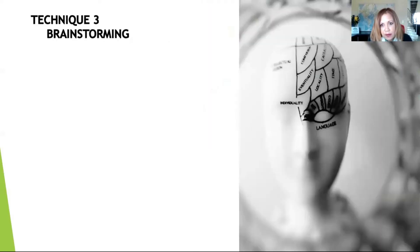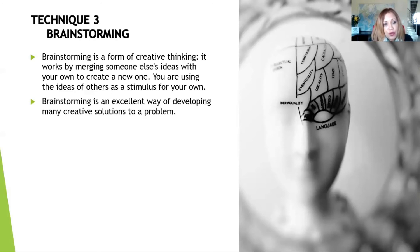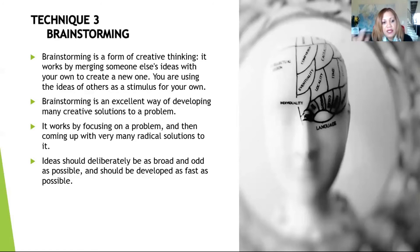The third one is brainstorming. I'm sure you've all heard about brainstorming. How do you do brainstorming? It's a form of creative thinking. It works by merging someone else's ideas with your own to create a new one. You're using the ideas of others as a stimulus for your own. Brainstorming is an excellent way of developing many creative solutions to one problem. It works by focusing on a problem and then coming up with very many radical solutions to it. Ideas should deliberately be broad and odd, as odd as possible, and should be developed as fast as possible.